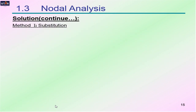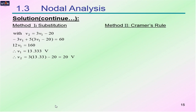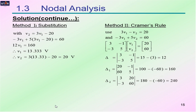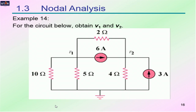Using the substitution method, we get V1 equals 13.333 volts and V2 equals 20 volts. Similarly, using Cramer's rule to solve the same equations gives V1 equals 13.333 volts and V2 equals 20 volts — identical to the substitution method. You can also use source conversion or mesh analysis to solve the same circuit problem.